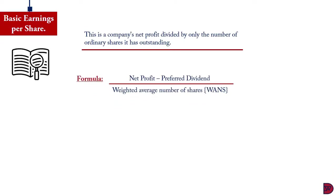The formula for basic earnings per share will be net profit less preferred dividend, in other words, the dividend paid to preference shareholders, all divided by weighted average number of shares.